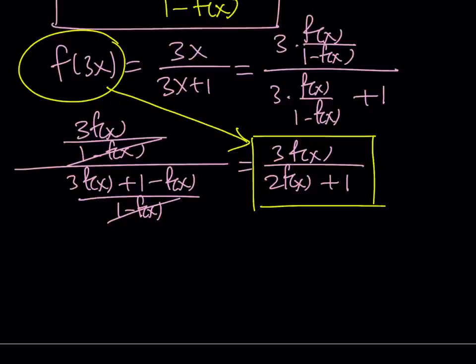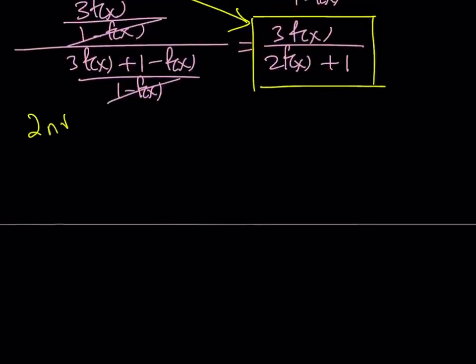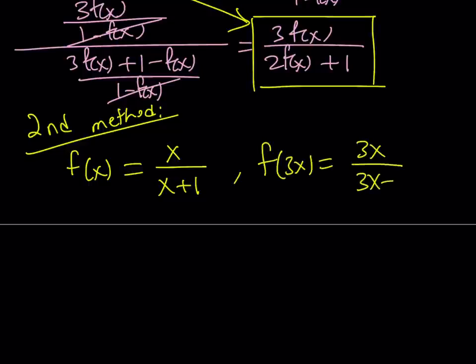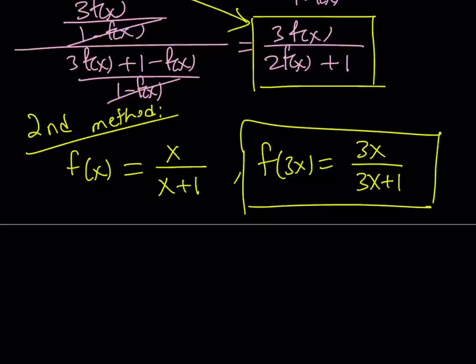Great. Let's go ahead and talk about the second method. The second method is somewhat different — otherwise it wouldn't be called the second method. Let's rewrite f of x as x over x plus 1, and f of 3x as 3x over 3x plus 1. I'd like to manipulate f of 3x so that it contains f of x as a variable.